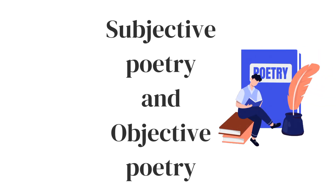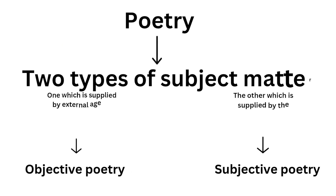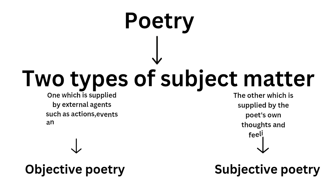Hi everyone, welcome to my channel English Literature World. In this video I am going to deal with the topics of subjective poetry and objective poetry. Poetry deals with two types of subject matter: one which is supplied by external agents such as actions, events, and things that we see, and the other which is supplied by the poet's own thoughts and feelings.